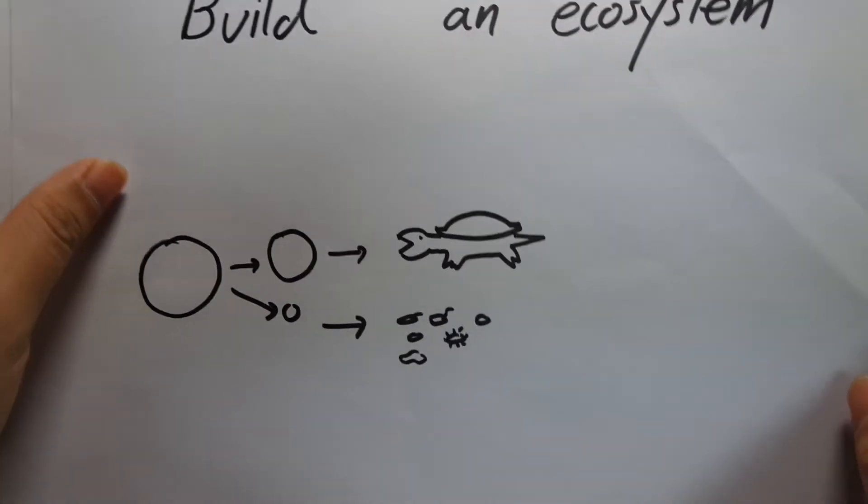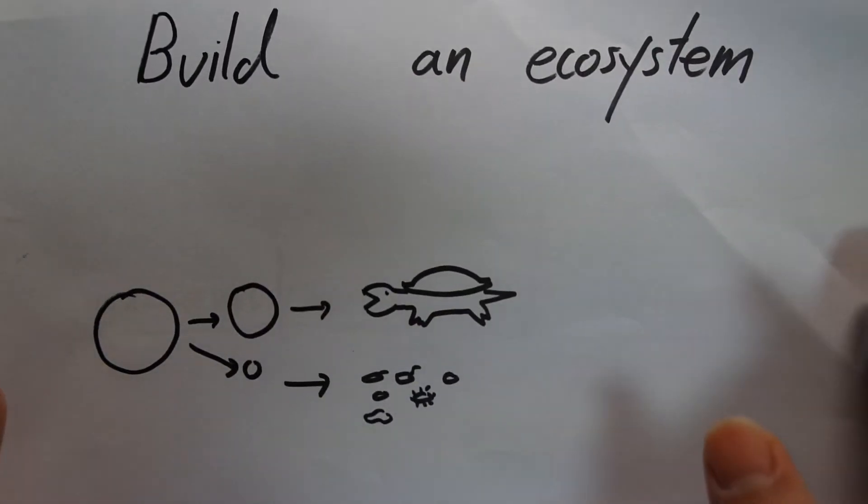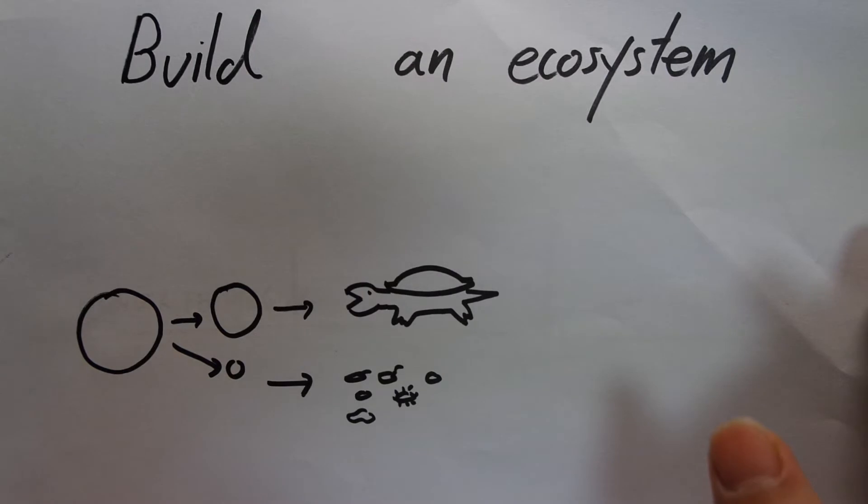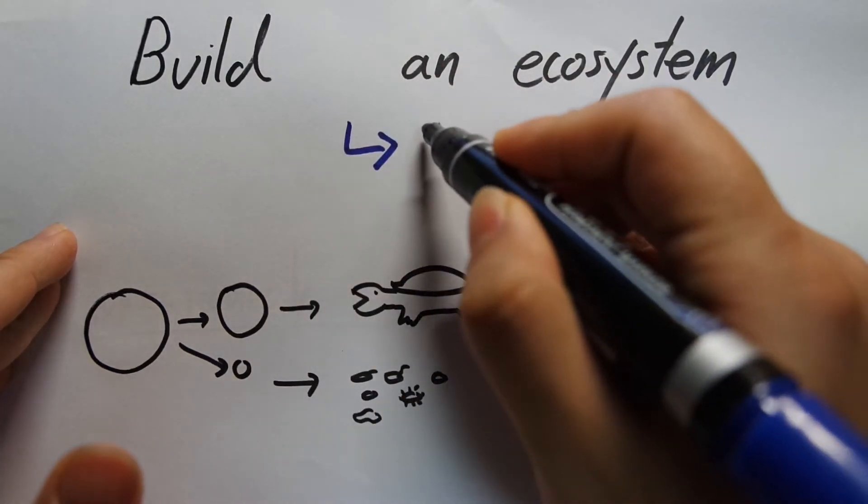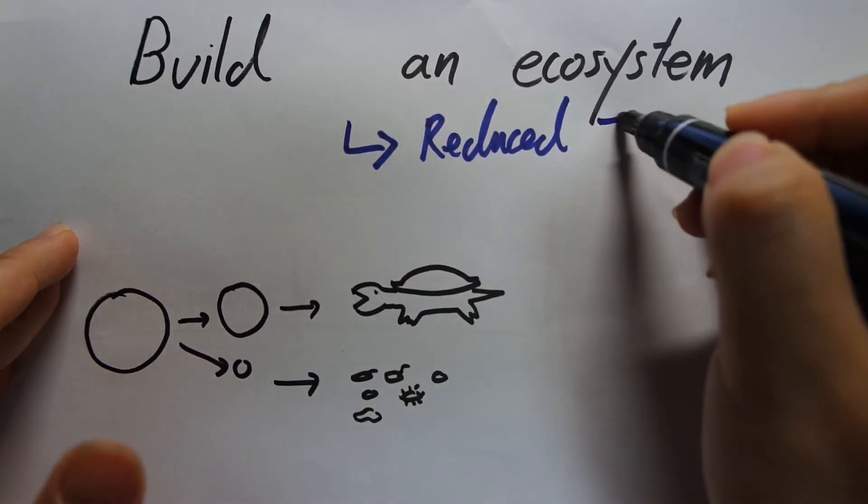And point two is how to build an ecosystem. Basically if you build a proper ecosystem this results in reduced feeding.